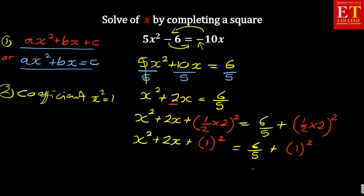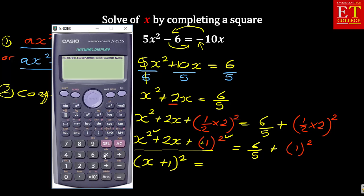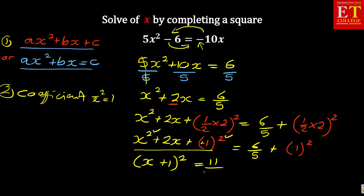The right-hand side can always be simplified with a calculator. Now you have a perfect square. This expression becomes x plus 1, all squared, is equal to — using a calculator, 6 over 5 plus 1 equals 11 over 5. So you're going to have x plus 1 squared equals 11 over 5.